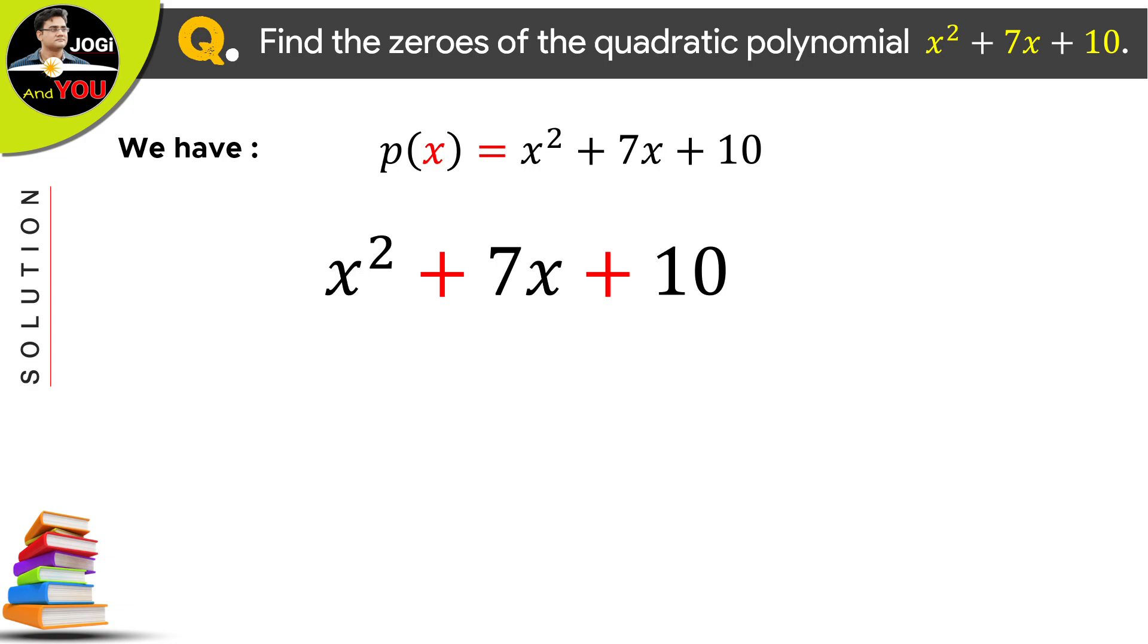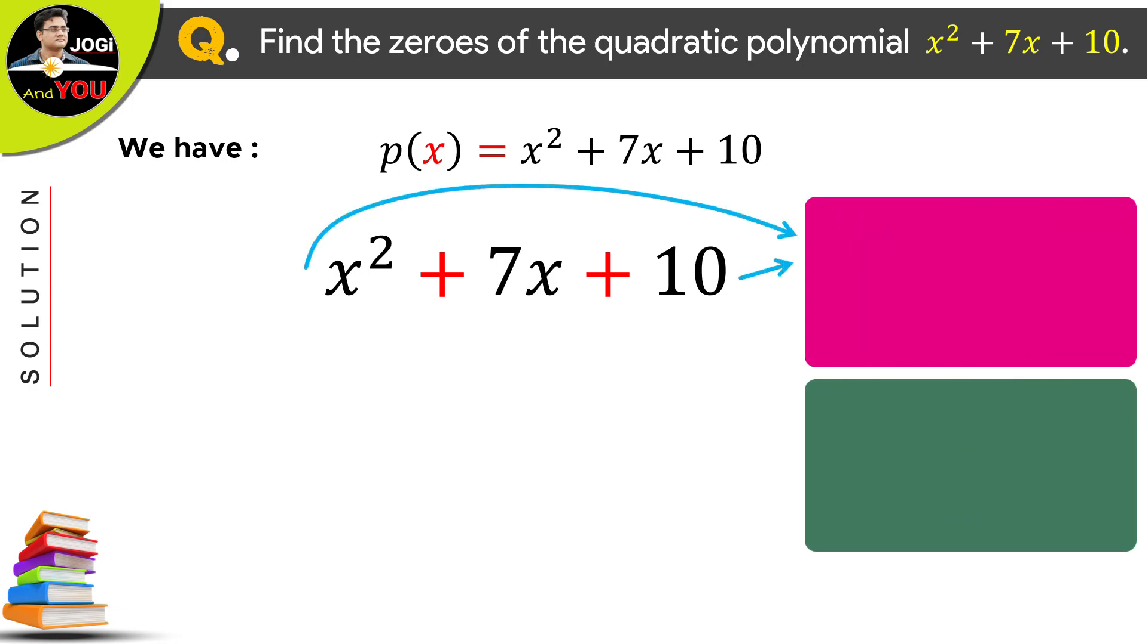For this, we will multiply the numeric value of the first and last term of the given quadratic polynomial. Here, our product is 10.